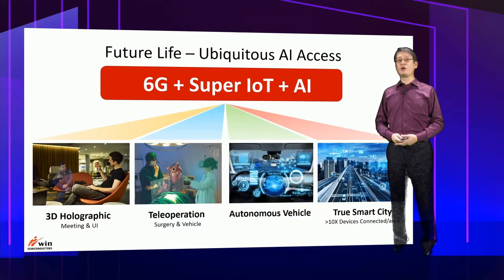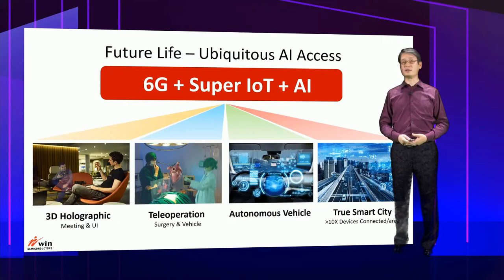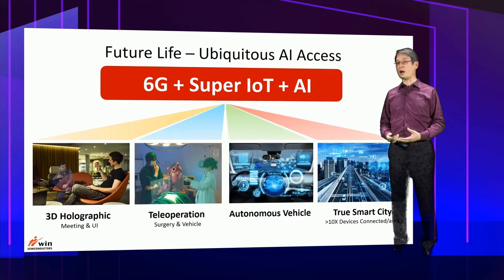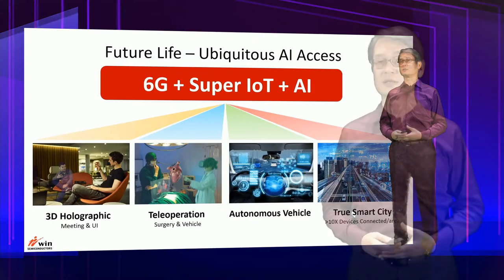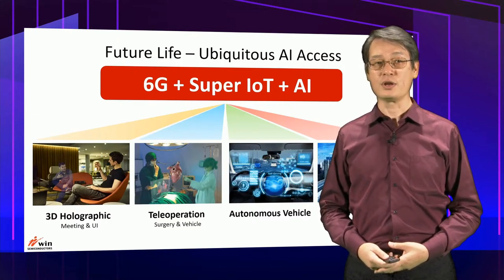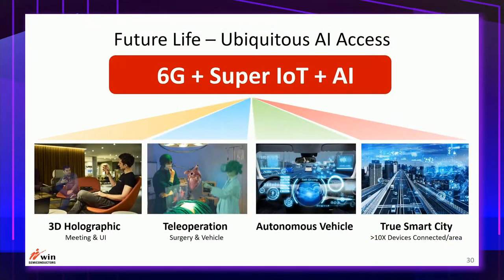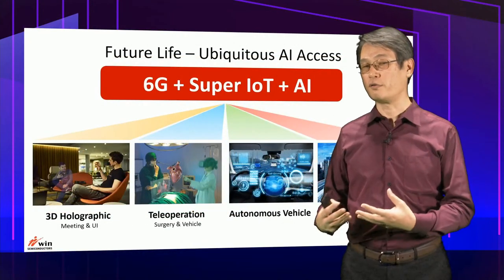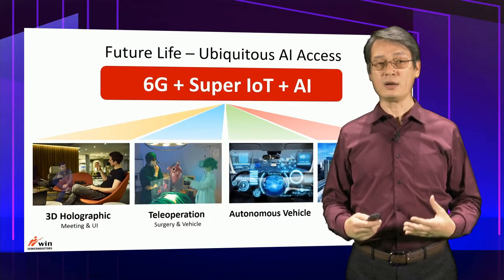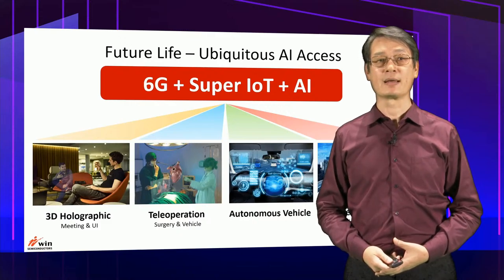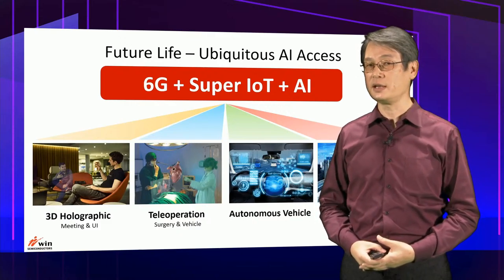It is believed the future life will be connected by massive intelligent devices through the fusion of 6G, Super IoT, and AI to achieve ubiquitous AI access. The boundary between the real and digital world is getting blurred. For example, 3D hologram could potentially be the next-generation display technology and user interface. It can be further merged with the concept of a digital twin, enabling real-time interaction with colleagues, friends, and family as if they are personally in front of you, unconstrained by space — like a sci-fi or Star Trek scene in real life.